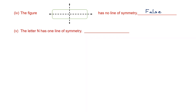Next one: the letter N has one line of symmetry. Let's have a look at the letter N. We can't draw a line of symmetry for it, so the letter N has no lines of symmetry. Therefore, this statement is false.